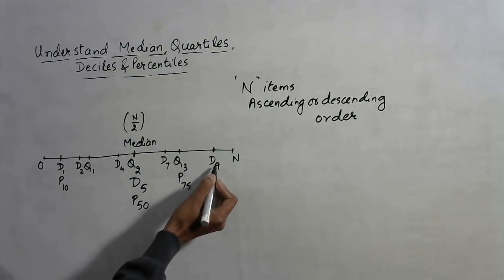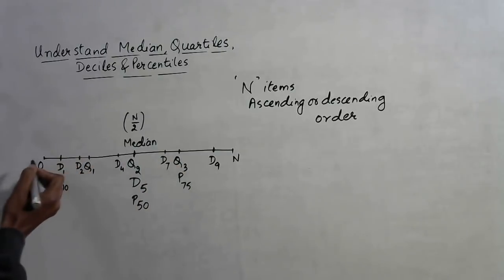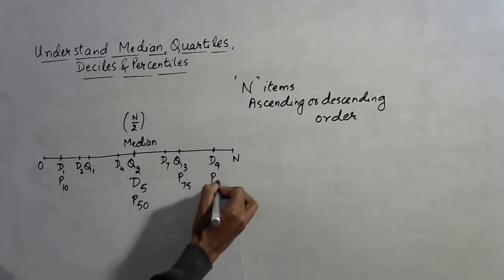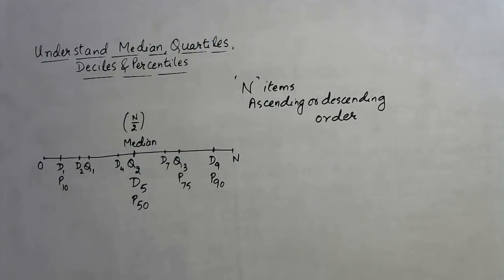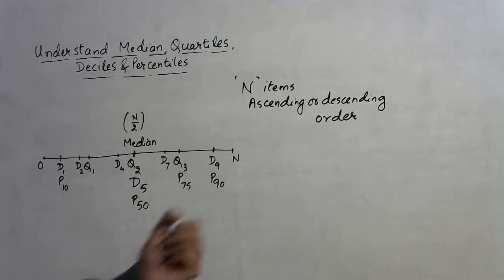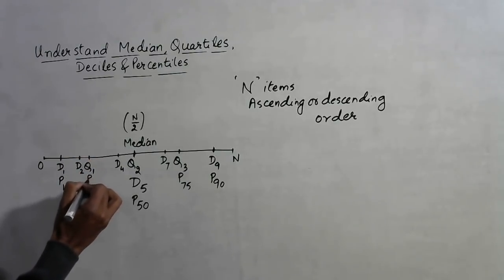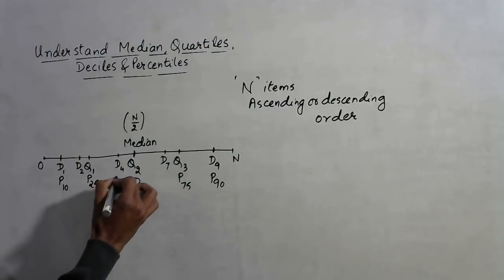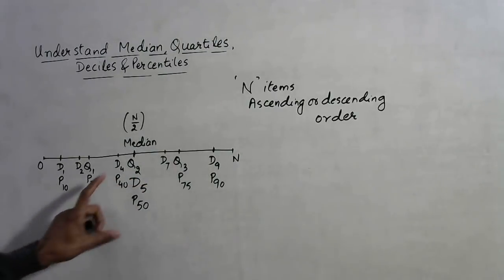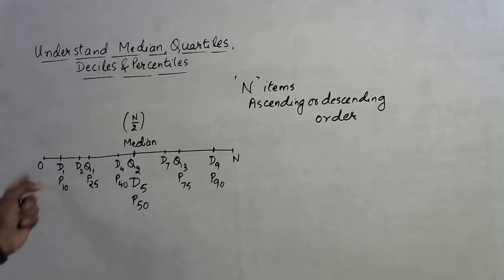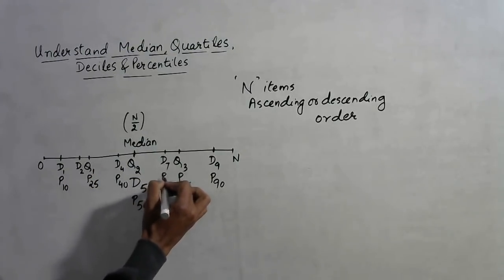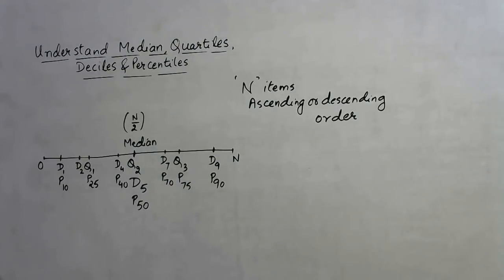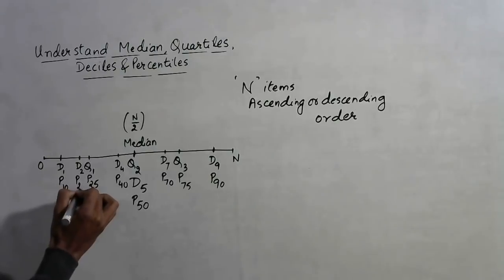D9 means the 9th decile — 90% of values lie below it — so it can also be called P90, the 90th percentile. Q1 is actually P25. D4 is P40, the 40th percentile and the 4th decile are the same value. The 7th decile is the same as the 70th percentile, and D2 is the 20th percentile.